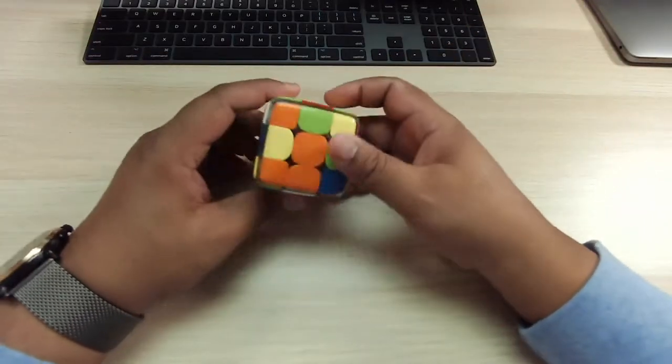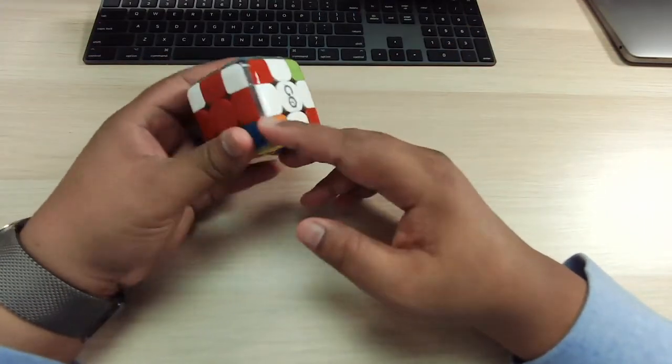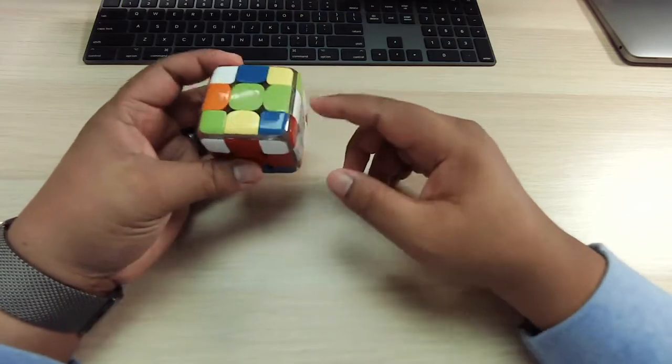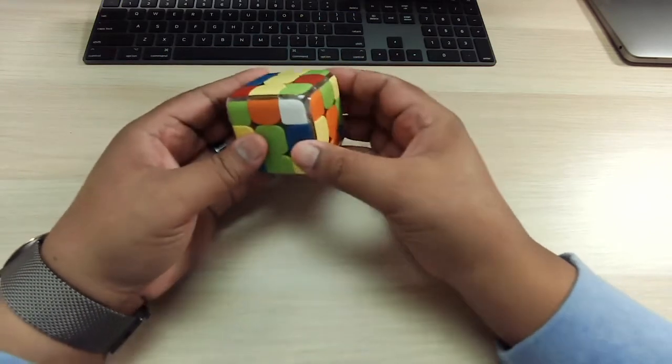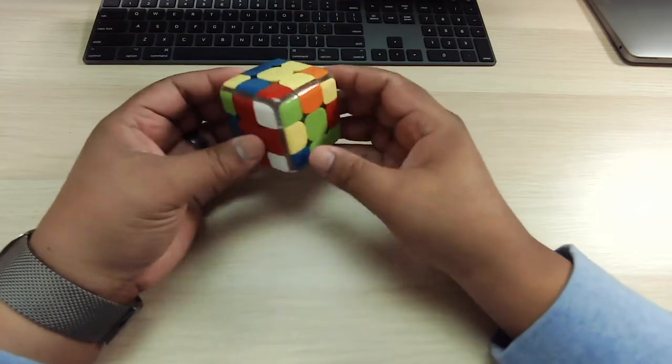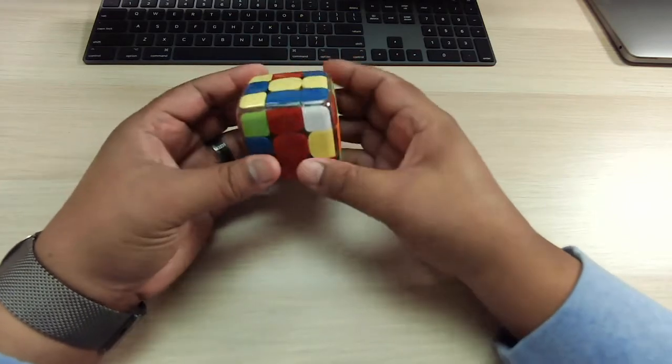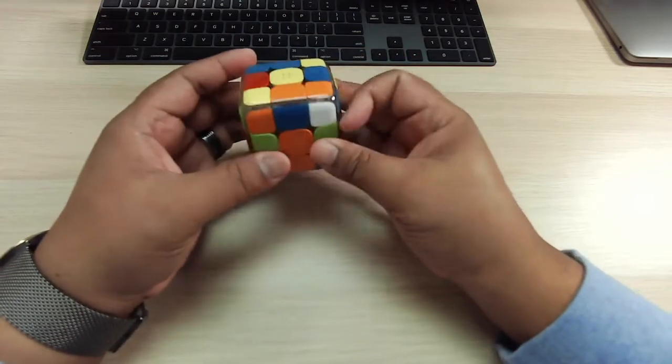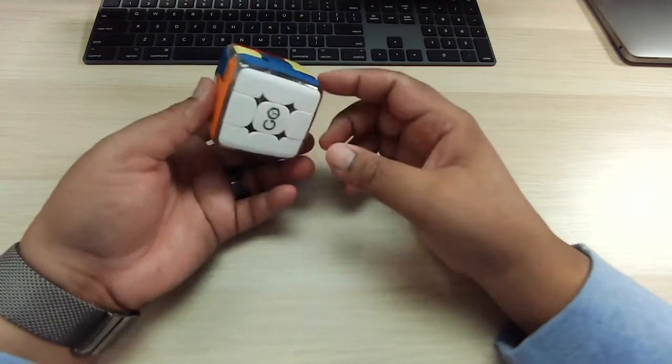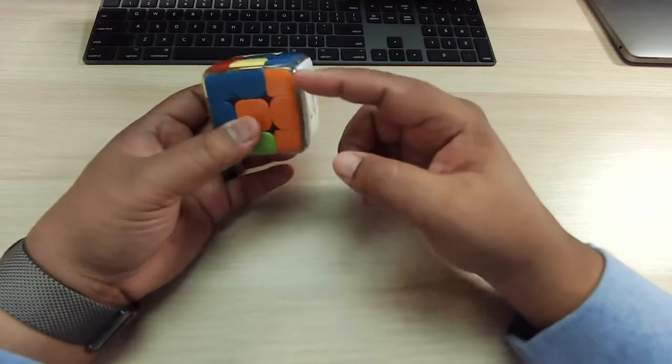So when we left off in session two, we had the white cross solved, which is the bottom part here. And I think we may have gotten all the way down to solving the corner pieces. So let me actually go ahead and do that right now so that we're in that same state. Okay, so now we have the whole bottom layer solved.